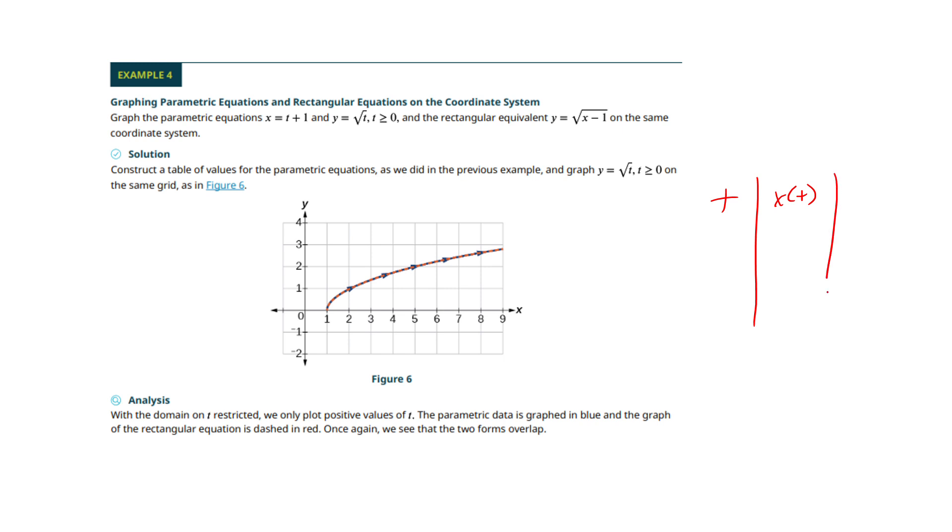x sub t, and y sub t. And you know you're going to get the same picture. The only difference with the parametric is it's going to have the arrows. So you're going to follow the same path. That's the point.